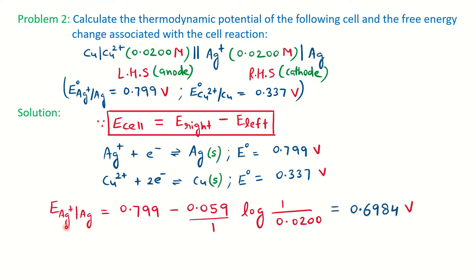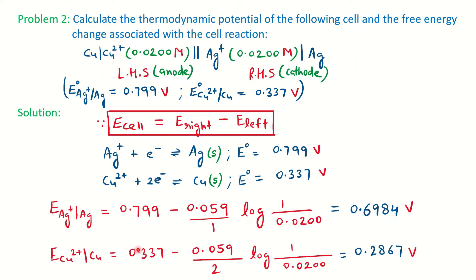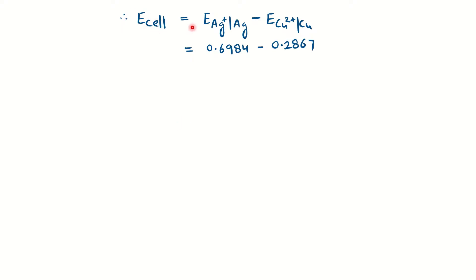For both electrodes, we write the Nernst equation. For silver: E(Ag) = E°(Ag) minus (0.059 / 1) × log(1 / [Ag⁺]), where [Ag⁺] = 0.0200. For copper: E(Cu) = E°(Cu) minus (0.059 / 2) × log(1 / [Cu²⁺]), where [Cu²⁺] = 0.0200, and n = 2 since Cu²⁺ requires 2 electrons. We calculate the redox potential for each electrode.